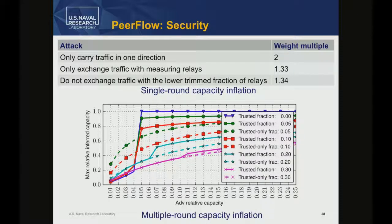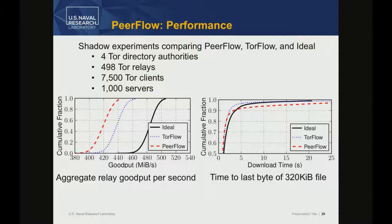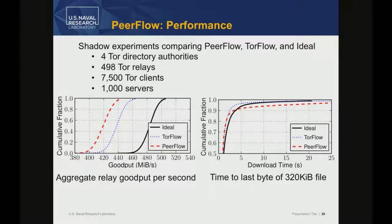We also ran performance experiments in Shadow on a smaller network, comparing against TorFlow and the ideal case where the network knows the actual bandwidths. Ideal performs best, then TorFlow, then PeerFlow. PeerFlow works slightly less well than TorFlow in total goodput, but the difference is relatively small—about five percent. Looking at download speed for individual completed transfers, there's a slightly longer tail for 300-kilobyte downloads, but largely they are the same.